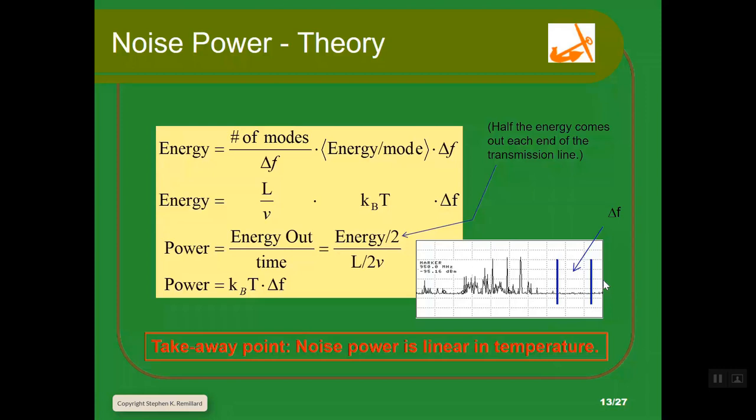Now there's power that we can talk about. The transmission line always has two ends, input and output. There are always two ports. If we stand at one end and look at the energy coming out per unit time, that's the power. The energy coming out is what we just derived, but you divide it by two because there are two ends and we're only at one end. The time is the time it takes the signal to move from one end to the other, so you use the length L over two divided by the speed V.